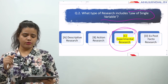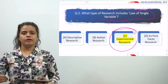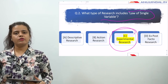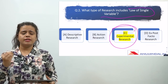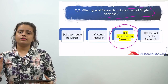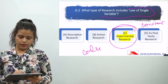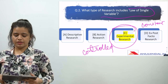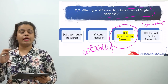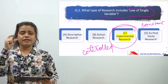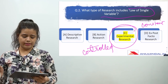You might wonder how controlling variables is related to the law of single variable. In experimental research, you control variables so that you can see the effect of only one variable. For instance, if you have five variables A, B, C, D, E — to see the effect of A, you control the other four variables; they remain constant. That is why experimental research is called the law of single variable — you see the effect of a single variable while others are controlled and constant.